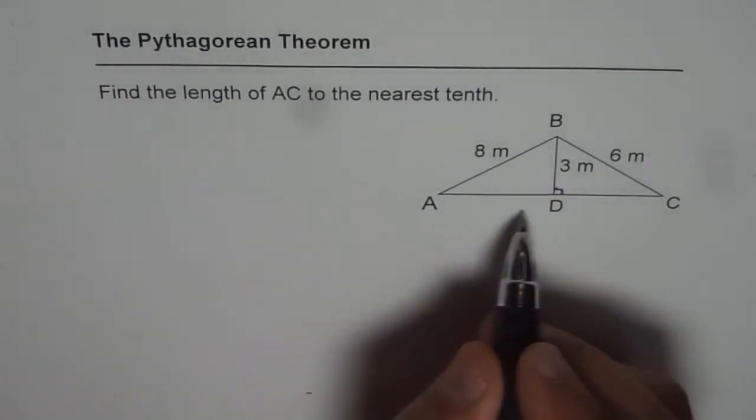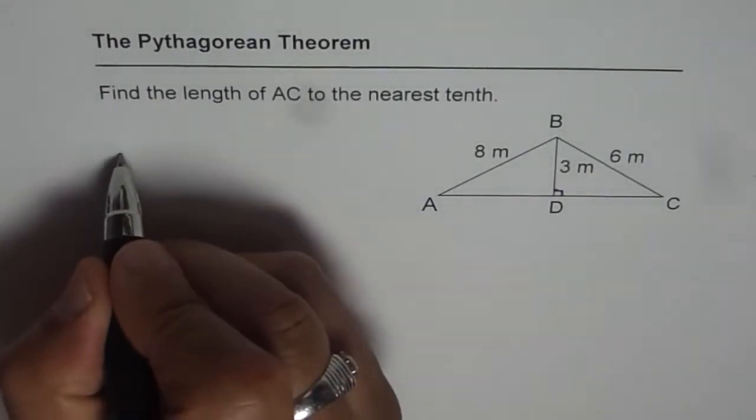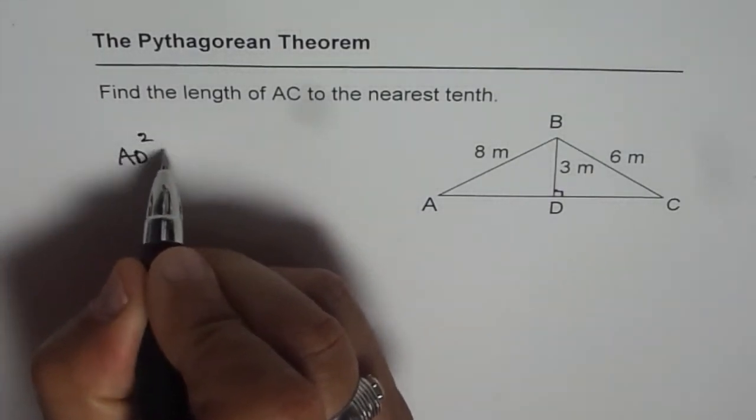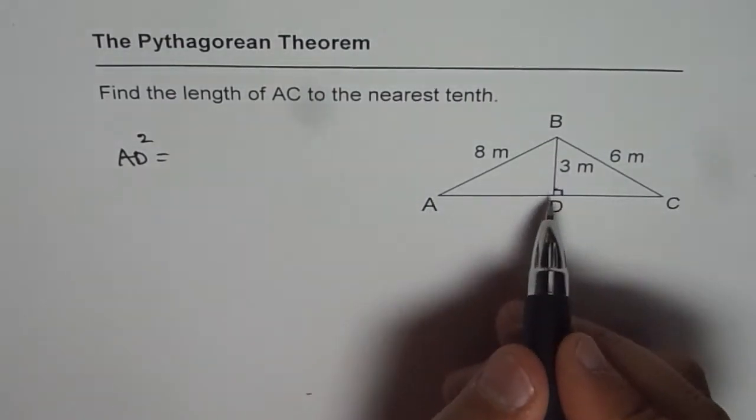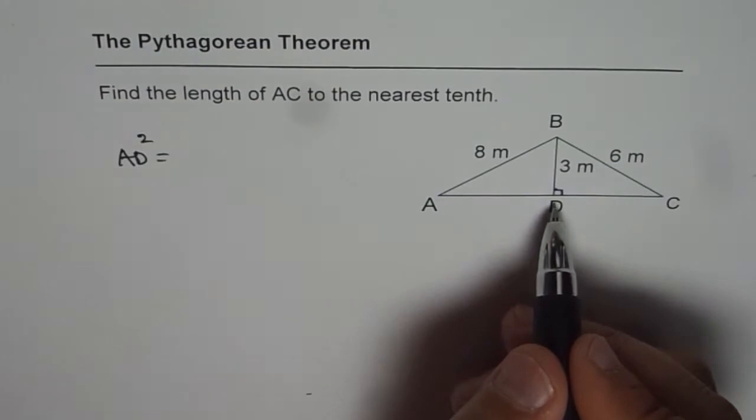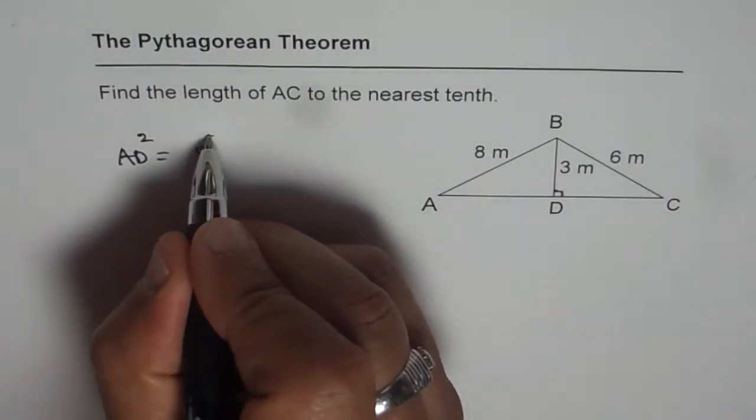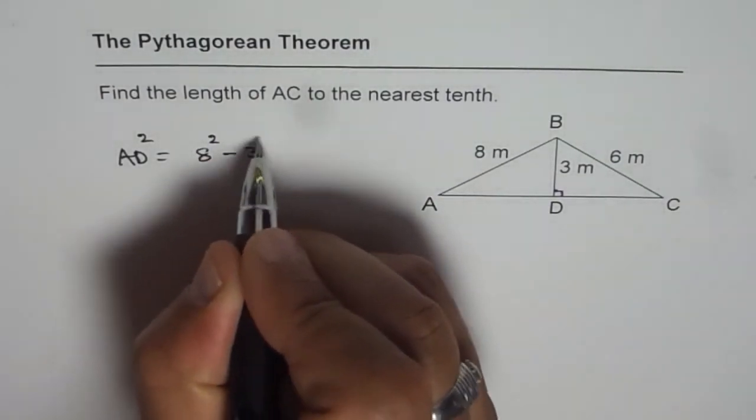So what is AD equal to? Let's say AD squared is equal to—since it is not the hypotenuse and not the longest side, it should be the difference of squares. So 8 squared minus 3 squared, correct?